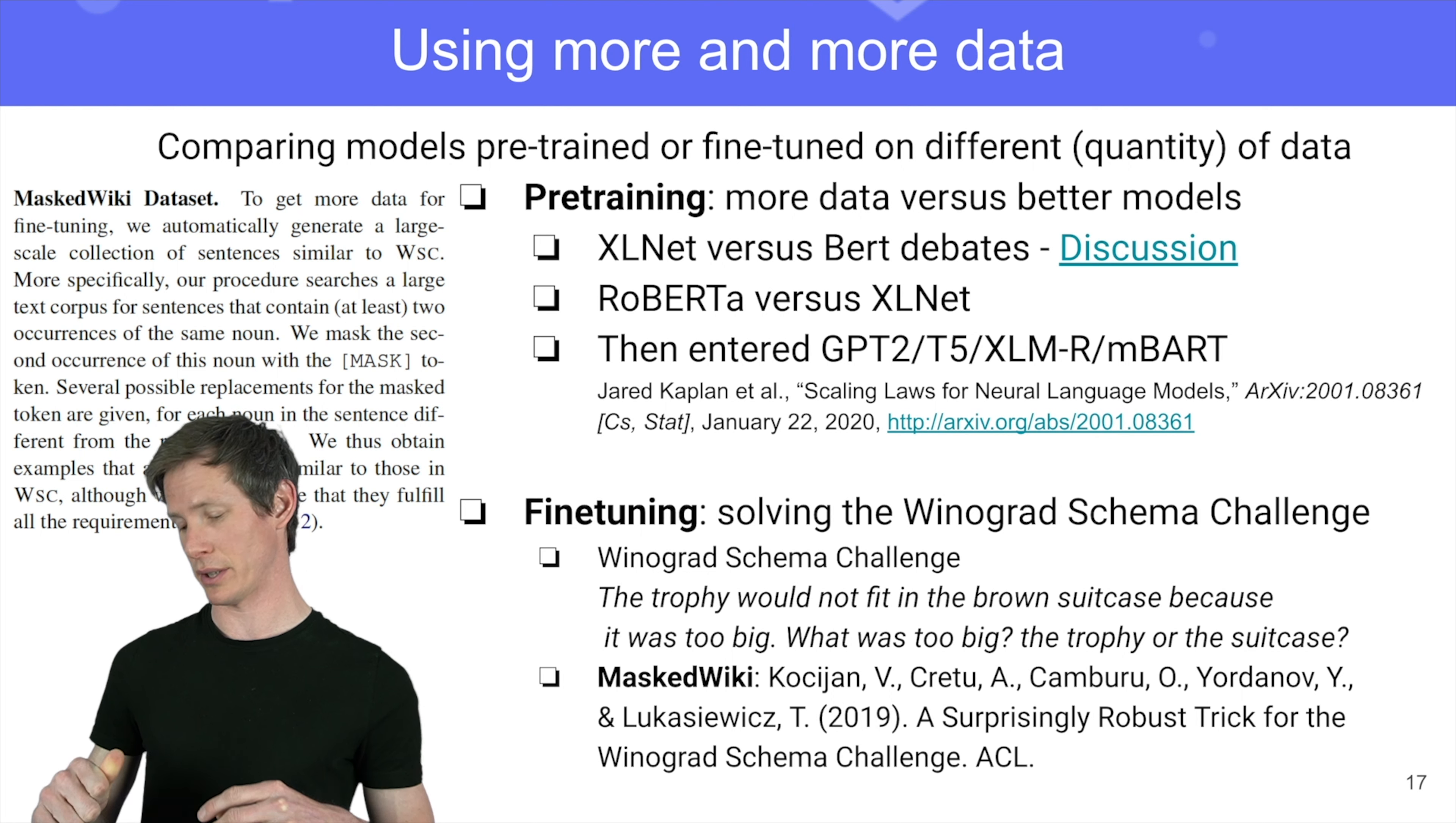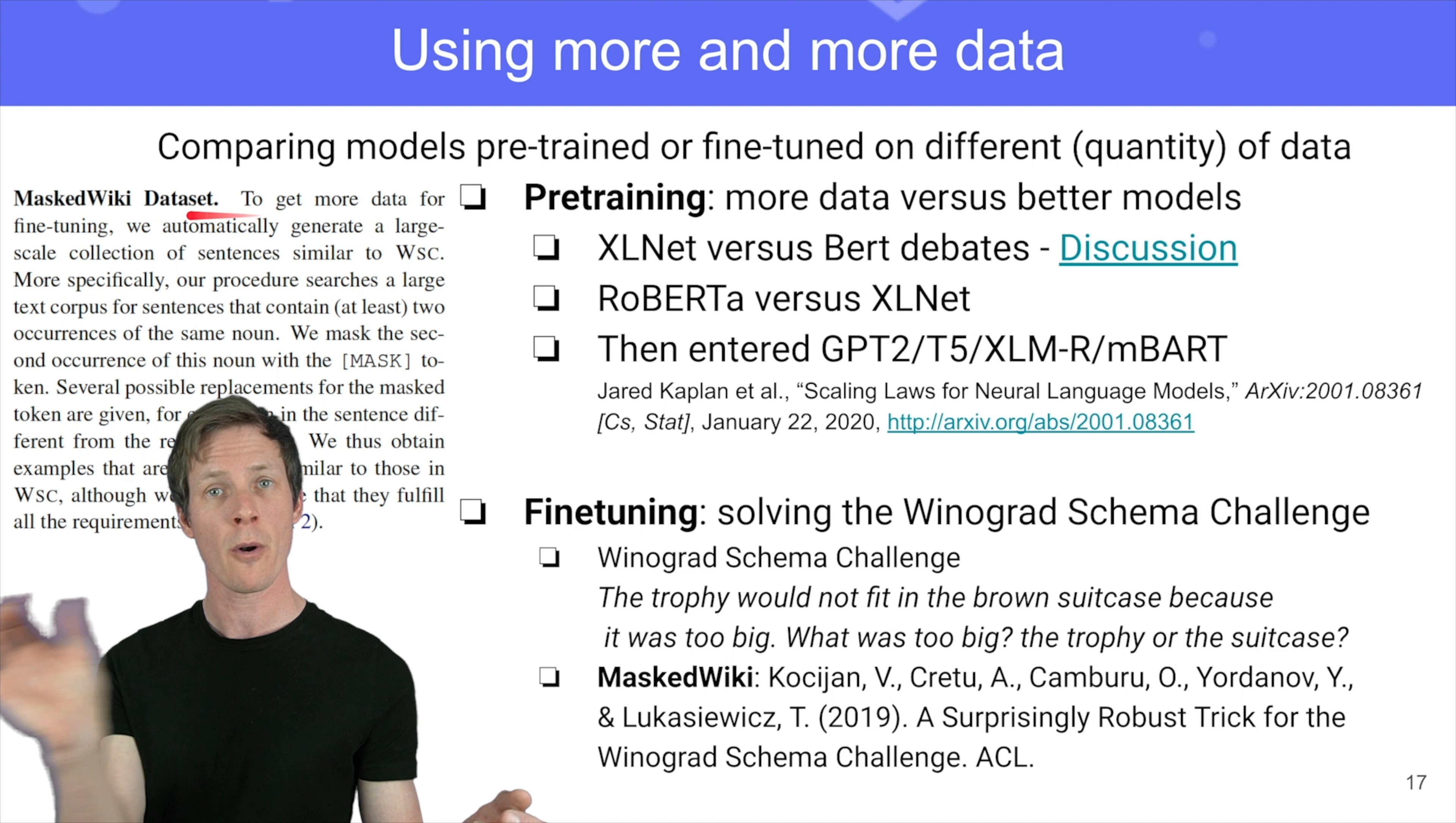And the way it was solved was actually to generate artificial data augmentation data sets with some heuristics, extracting from Wikipedia sentences where you have two times the same noun, like two times trophy, and replacing one of them by it. Like this, you can build with these heuristics a huge data set from any crawl text data set. And you can pre-train your model on that, and then do this fine-tuning on the Winograd Schema Challenge after that. And you can solve the task. But you can see that we're not really happy about that because scientifically we have not really learned anything about common sense by doing that. We've just learned that more data is better.